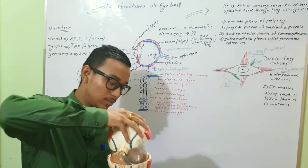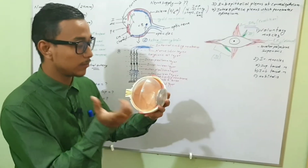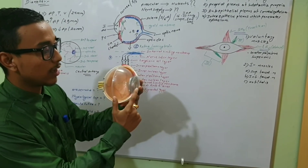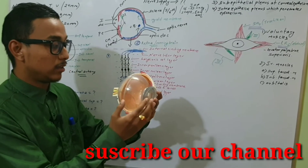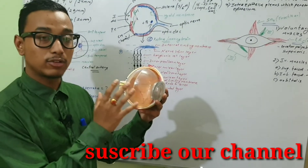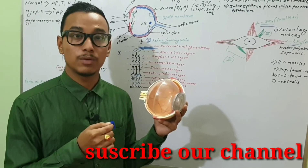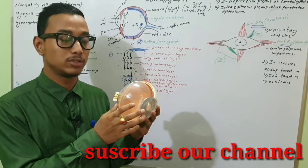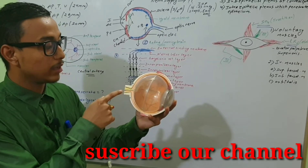Looking at the internal structure on the dummy, we can see the vitreous body containing vitreous humor and the anterior segment containing aqueous humor. The formation of aqueous humor occurs by two processes: approximately 80% by active process via the sodium-potassium ATPase pump, and 20% by ultrafiltration and diffusion. You can also see the optic disc highlighted in yellow.